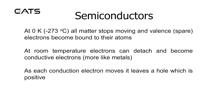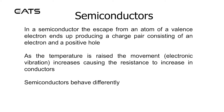At zero Kelvin, all matter stops moving, and valence spare electrons become bound to their atoms. At room temperature, electrons can detach and become conductive electrons, more like metals. As each conduction electron moves, it leaves a hole which is positive. In a semiconductor, the escape from an atom of a valence electron ends up producing a charged pair consisting of an electron and a positive hole.